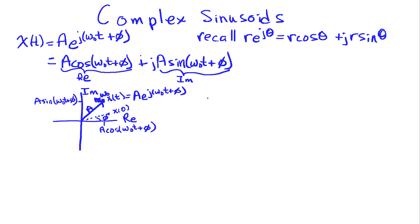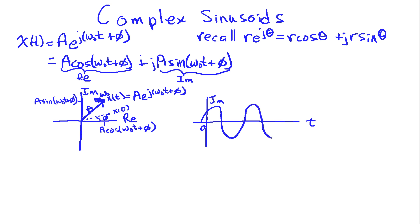Suppose we draw the projection on the imaginary axis as a function of time. Looking at how the rotating vector traces out its projection on the imaginary axis, we get a sinusoidal shape starting at time zero. One revolution takes two pi over omega-naught seconds, because the vector is rotating at omega-naught radians per second, going counterclockwise.